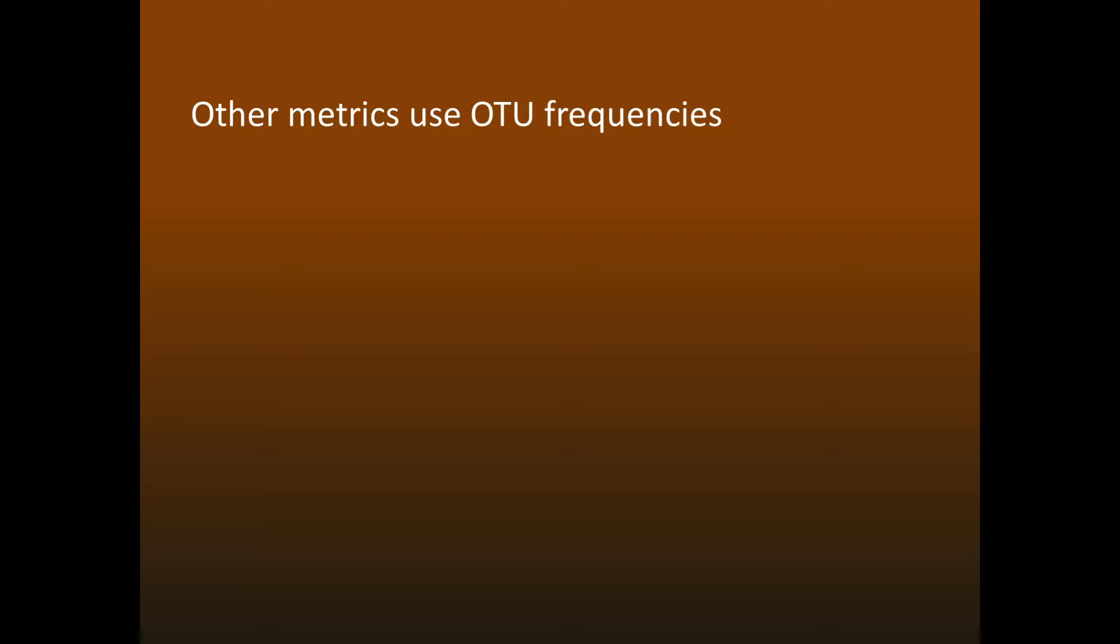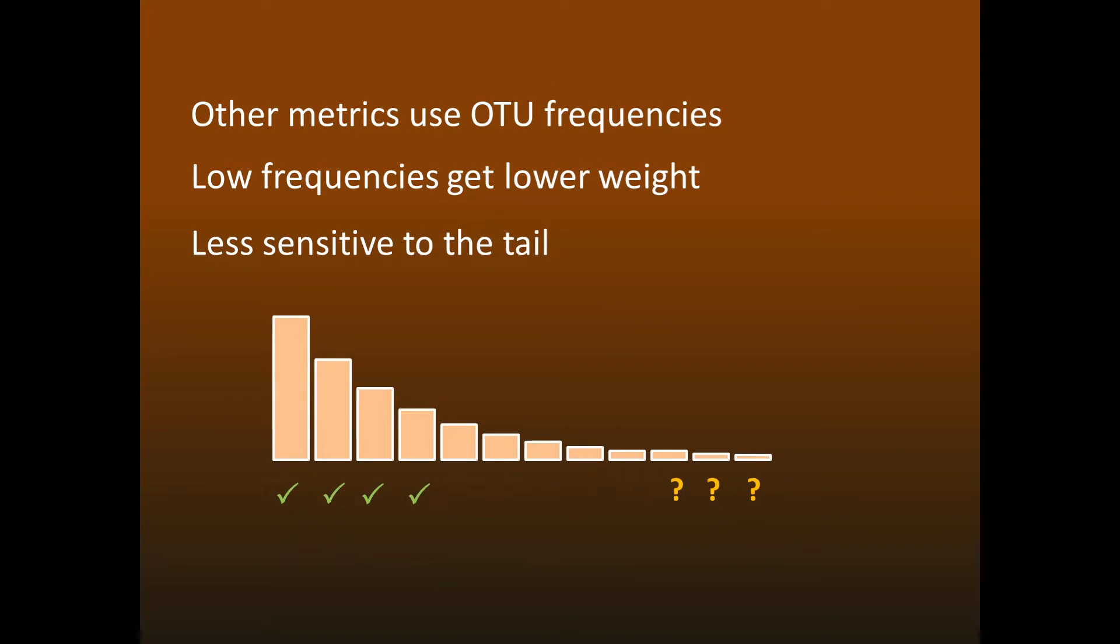Clearly, we can't measure richness. However, most other alpha-diversity metrics, such as Shannon entropy, are calculated from frequencies, where low-frequency OTUs have a lower weight. So these metrics are less sensitive to the long tail of low-abundance OTUs, which are a mix of errors and rare species.